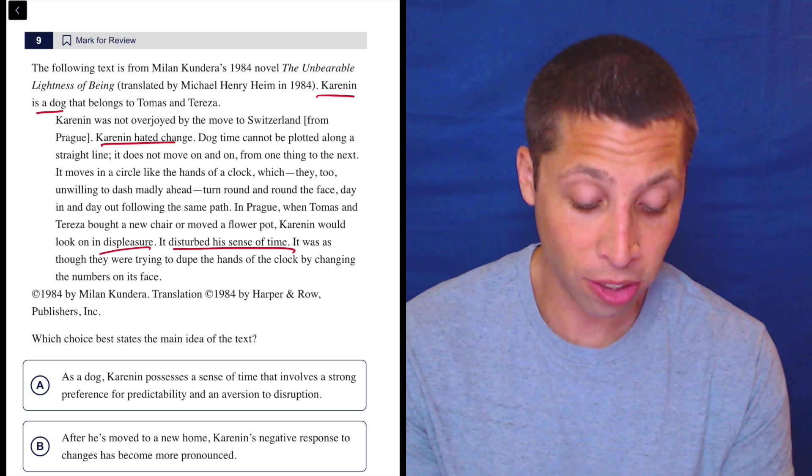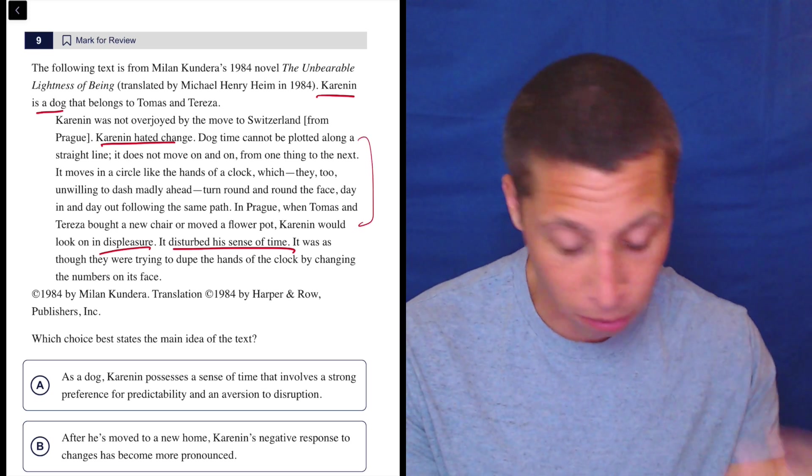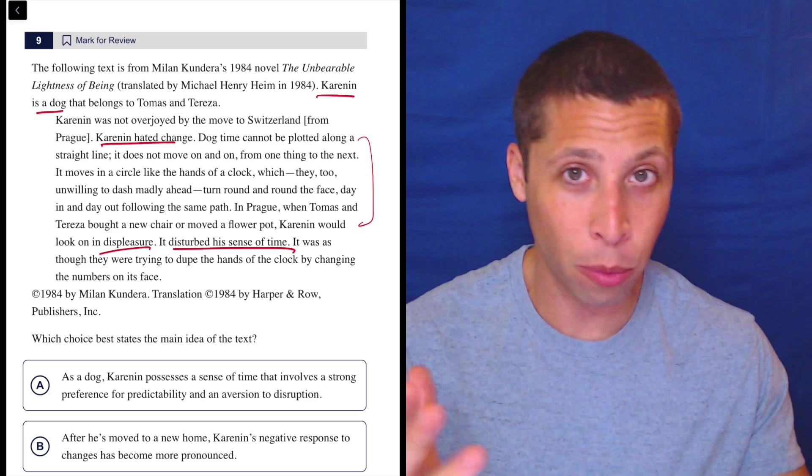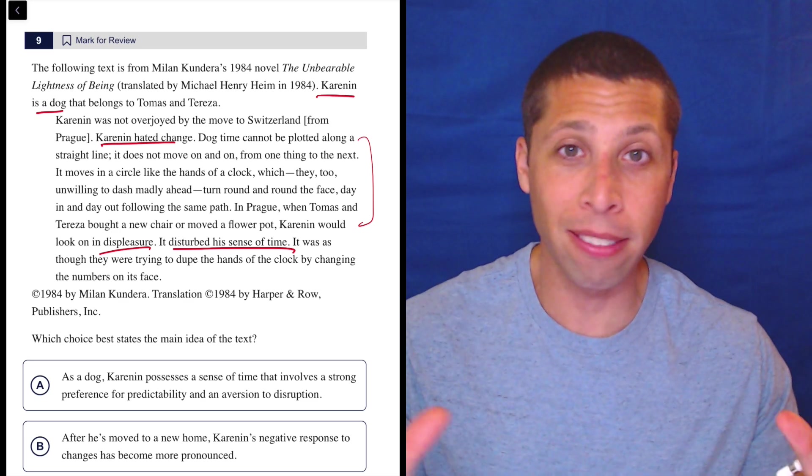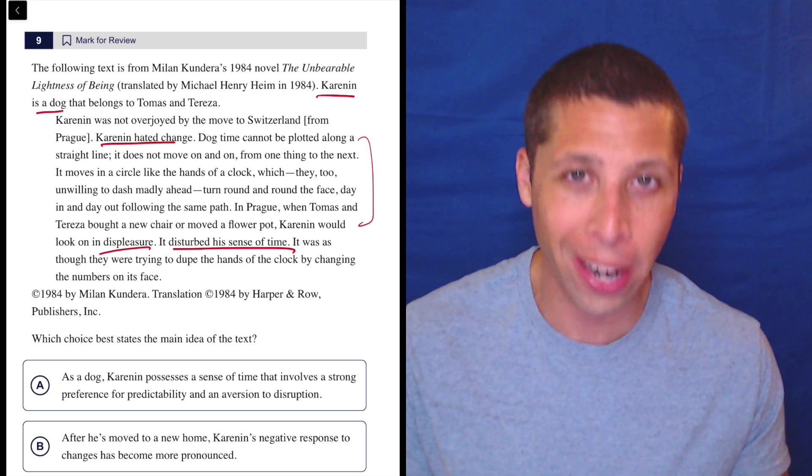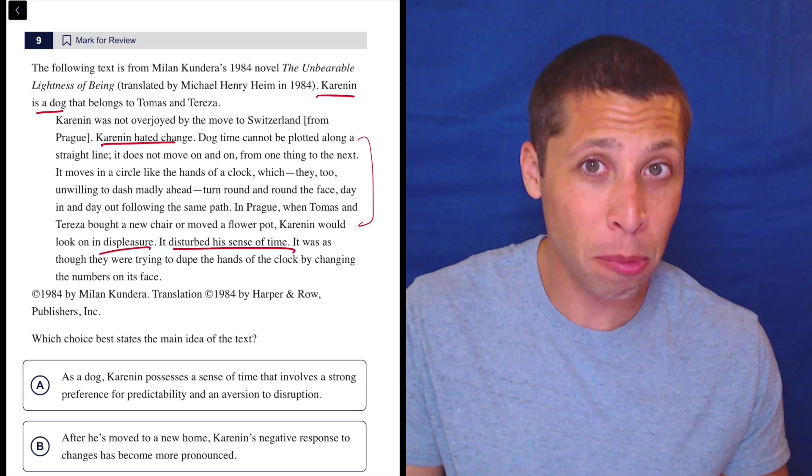Notice what I underlined. The stuff that makes the easiest sense, right? There's a whole chunk in the middle where there's something about clocks and hands and time moving on in a weird way. And okay, I get it, kind of, but not enough to pull anything out of it. So I'm not going to try to summarize that. I will go back to it if I need it.